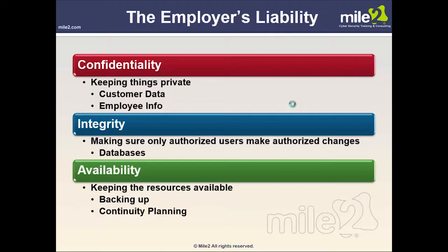You've probably heard of the CIA, which stands for Confidentiality, Integrity, and Availability. When it comes to confidentiality, encryption comes into play. The whole purpose of confidentiality is to keep things private — such as customer data and employee information — and we do this through the process of encryption, which will have its own dedicated unit.